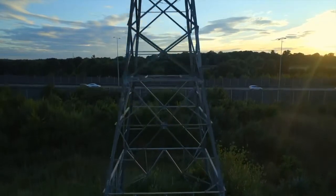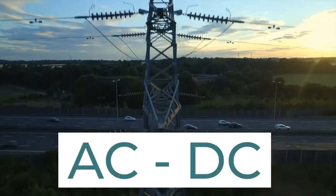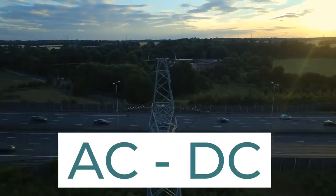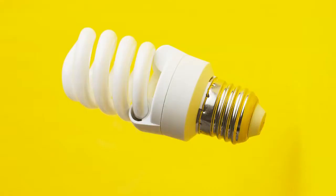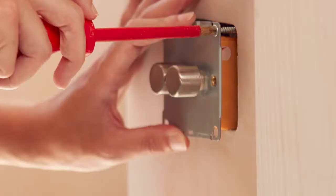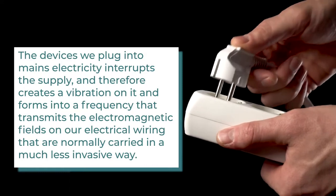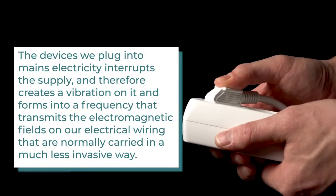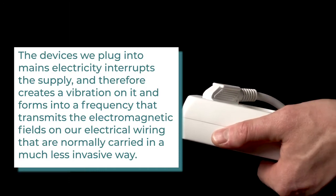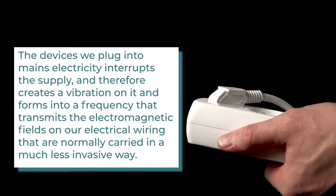Dirty electricity can come from electronics and electrical appliances that convert alternating current into direct current. These devices include computers, televisions, low energy light bulbs, incandescent light bulbs, phone chargers and dimmer switches. The devices we plug in interrupt the supply and therefore create a vibration on it, forming a frequency that transmits electromagnetic fields on our electrical wiring that are normally carried in a much less invasive way.